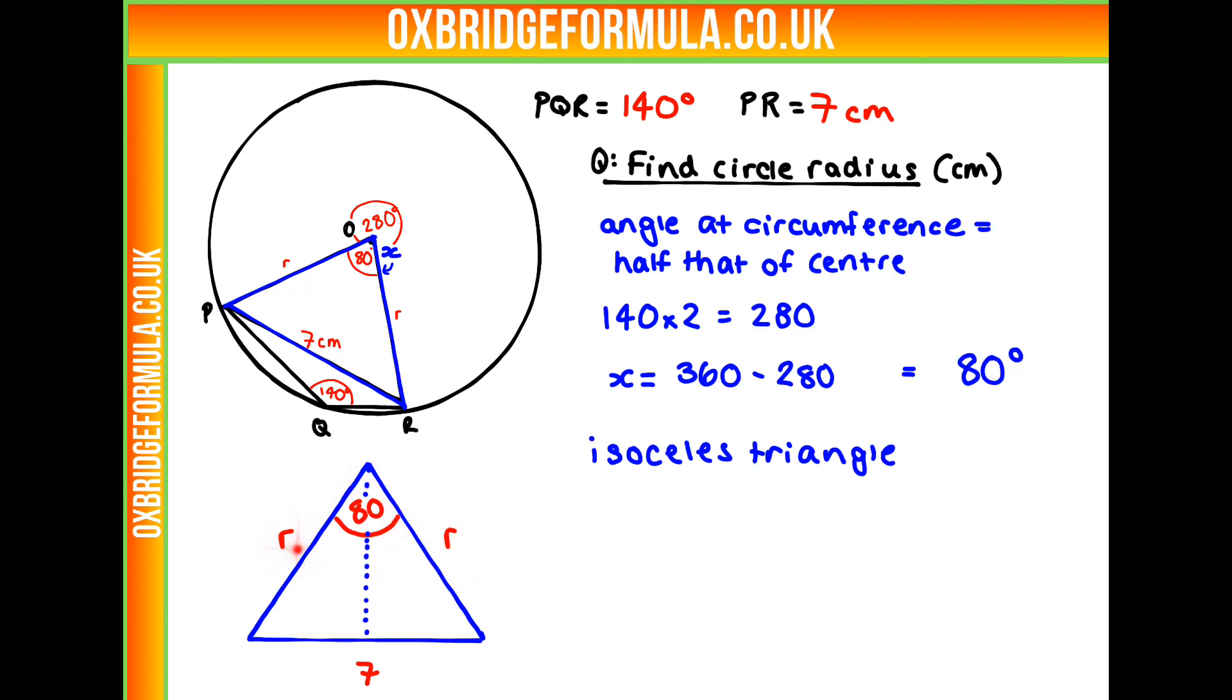Now we can work out R by using some trigonometry. We can make a right-angled triangle by splitting this isosceles triangle in half. So if we do that, we get our R as our hypotenuse. If we split this in half, we get 3.5 as our base length there, and we have an angle of 40 degrees.